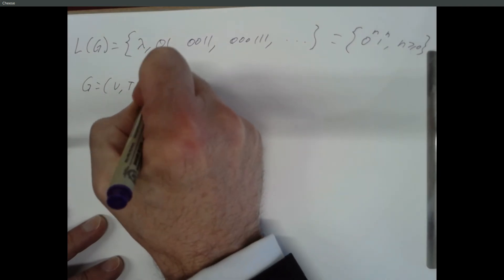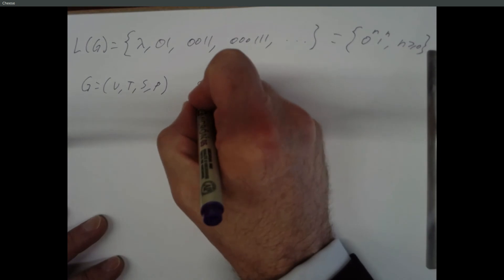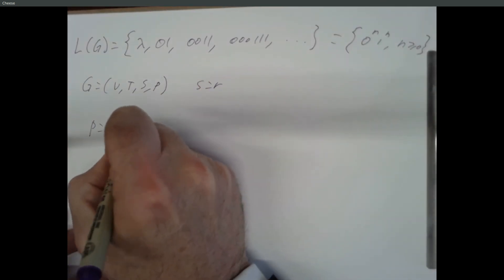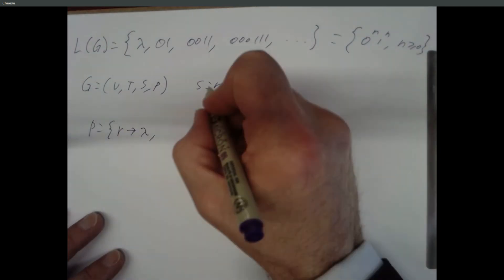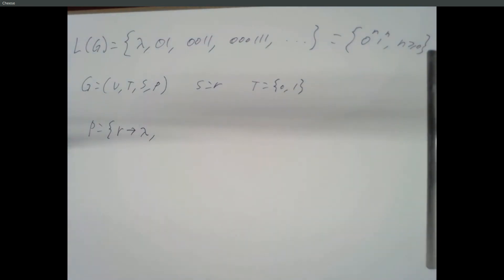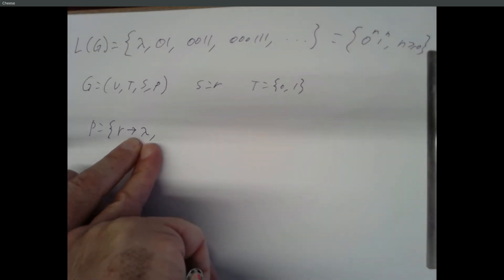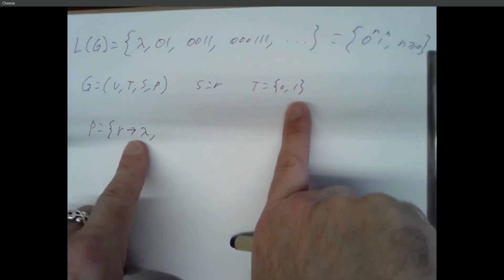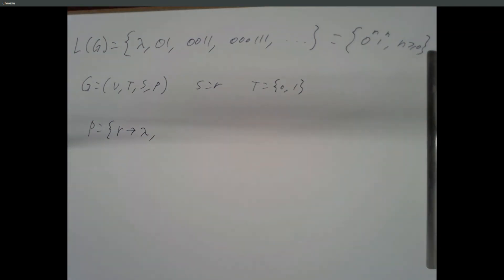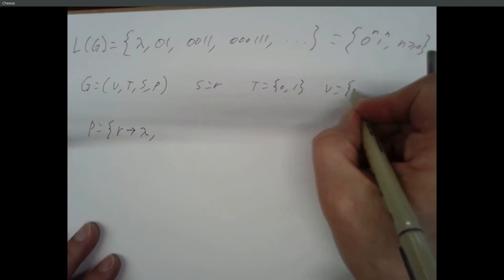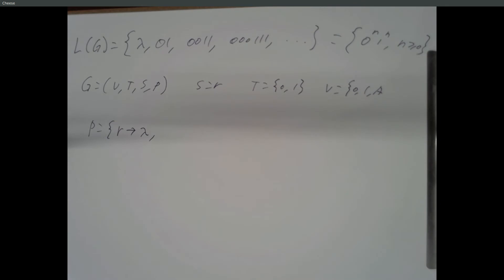How do we start? If we have to include the empty string, then R would have to be able to turn into nothing. Let's do a start symbol of R, with a rule that R can turn into lambda. Our terminal symbols are just zero and one. Lambda is not a symbol — it means the string with zero length, like empty quotes. We wouldn't need to put lambda in the set of terminals; we're making a string with no symbols in it. We probably need some kind of temporary symbol — maybe an A.